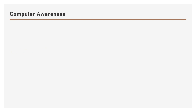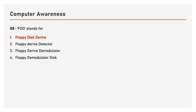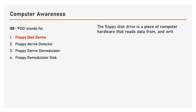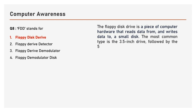Question number 8: FDD stands for — options are Floppy Disk Drive, Floppy Drive Detector, Floppy Drive Demodulator, Floppy Demodulator Disk. The answer is Floppy Disk Drive. The floppy disk drive is a piece of computer hardware that reads data from and writes data to a small disk. The most common type is the 3.5-inch drive, followed by the 5.25-inch drive, among other sizes.